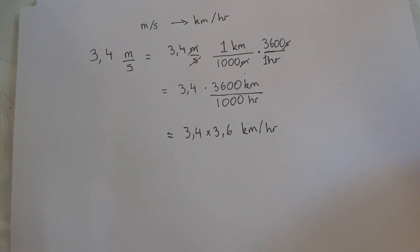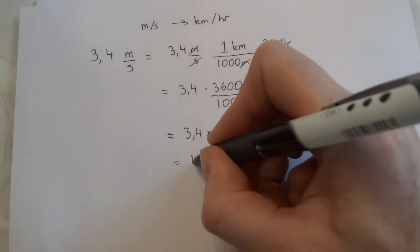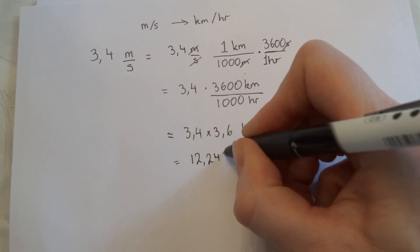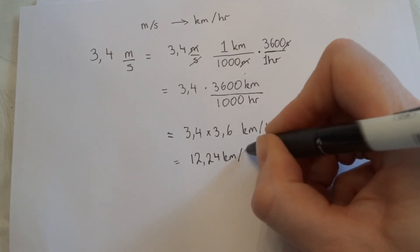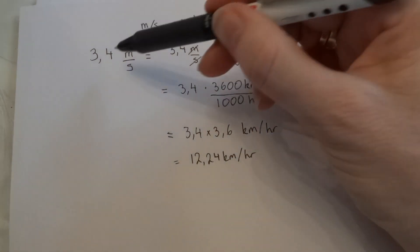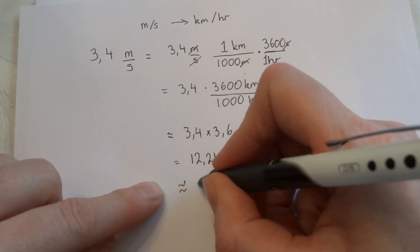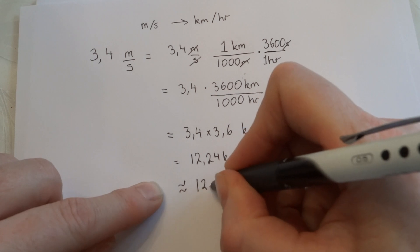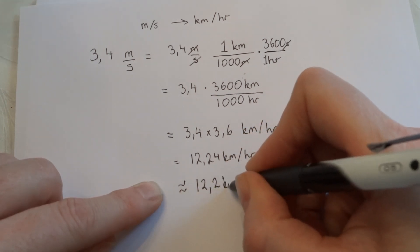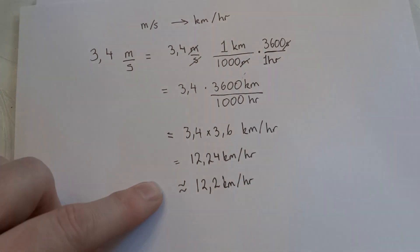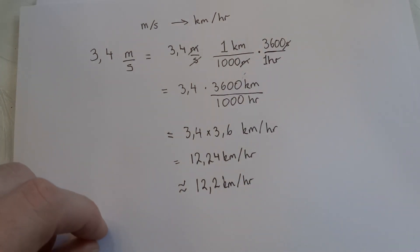We can use a calculator for this, so let's work it out. We get 12.24 kilometers per hour. Because the question was to one decimal place, let's give our answer to one decimal place — so it's approximately 12.2 kilometers per hour. And there we've converted meters per second to kilometers per hour.